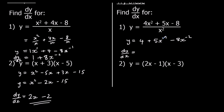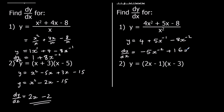Continuing to differentiate: 5 times x to the power of negative one — times by the power, 5 times negative one is negative five — and take one off the power, which becomes negative two. Negative 8 times negative two is positive sixteen, and we take one off the power, giving negative three.